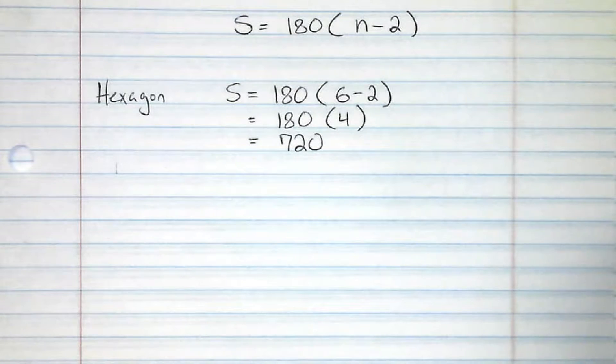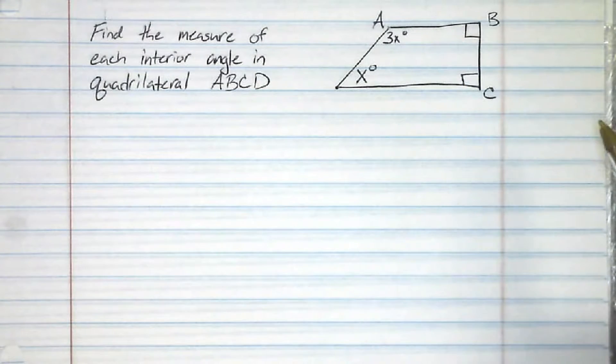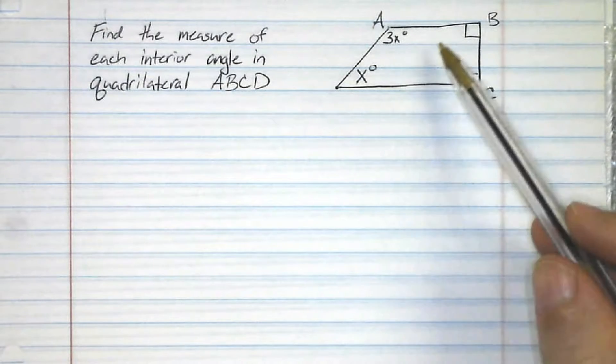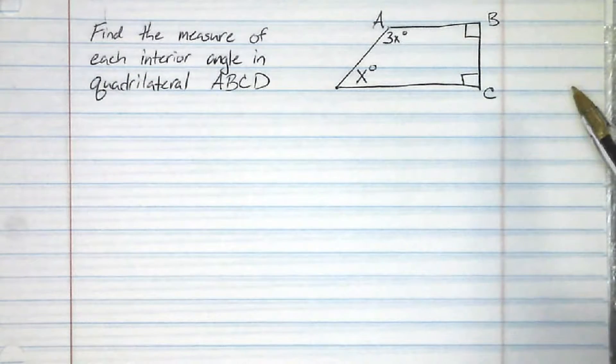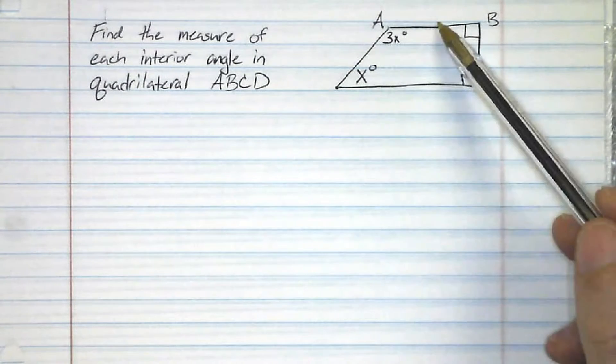Now, let's take a look at a slightly more complex example. So let's say you were presented with this figure, and you were told to find the measure of each interior angle in this quadrilateral. So we know this quadrilateral is a polygon. It is convex, so we can use this same formula. So how many sides do we have?